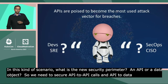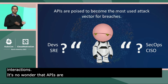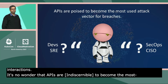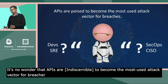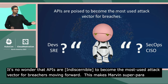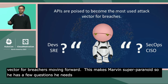In this kind of a scenario, what is the new security perimeter? It's basically an API or a data object. So we need to secure API-to-API calls and API-to-data object interactions. It's no wonder that APIs are poised to become the most used attack vector for breaches moving forward. This makes Marvin super paranoid. So he has a few questions he needs to ask both the developers and SREs on the one hand and the security folks on the other.